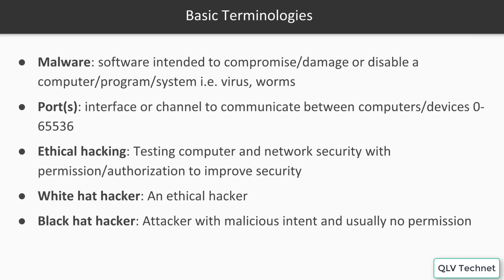Ports are interfaces or channels used to communicate between computers or devices. Ports range from 0 to 65,536, with 0 to 1024 being the most popular port numbers for services. For example, port 22 is commonly used for SSH, and port 21 is commonly used for FTP.